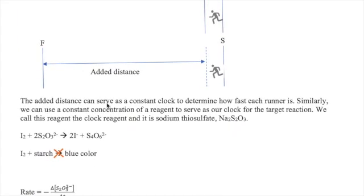The analogy to the added distance is the addition of the thiosulfate ion S2O3 2-. Thiosulfate reacts with iodine, thus removing it from the reaction mixture. If iodine is not present, then the iodine and starch reaction can't take place and the blue color won't show up. The blue color will appear after all the thiosulfate ion has been consumed. We call thiosulfate our clock reagent and the thiosulfate iodine reaction the clock reaction because it functions to help us measure the time for the reaction.